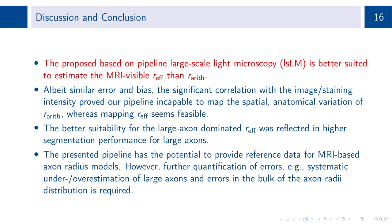To conclude, the proposed pipeline based on large-scale light microscopy is better suited to estimate the MRI-visible effective radius than the arithmetic mean radius. Albeit similar error and bias, the significant correlation with the image intensity proved our pipeline incapable to map the spatial, anatomical variation of the arithmetic mean radius, whereas mapping the effective radius seems feasible.